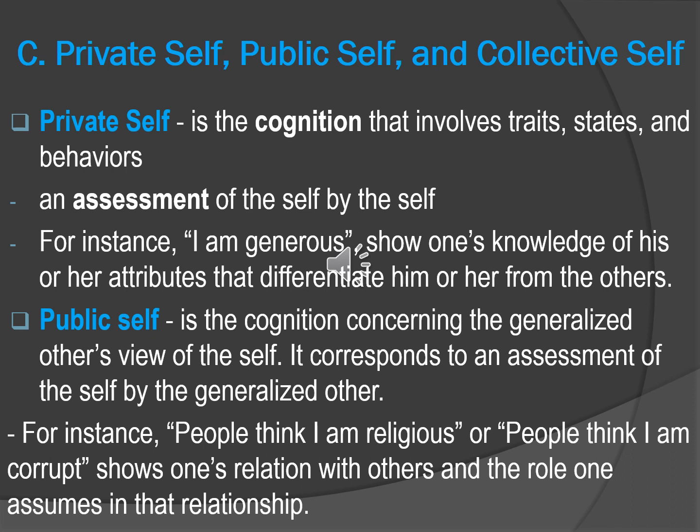Next sociological perspective: we have private self, public self, and collective self. The private self involves cognition concerning traits, states, and behaviors — an assessment of the self by the self. Sometimes we come to a point where we assess and examine our own self. For instance, 'I am generous.' It shows one's knowledge of his or her attributes that differentiate him or her from others.